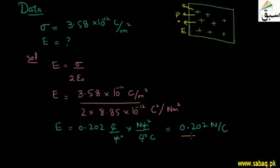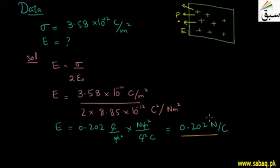This means that the electric field at any point in front of this infinite sheet of charge is 0.202 newton per coulomb. Whatever space is in front of this infinite sheet of charge is influenced by this electric field.